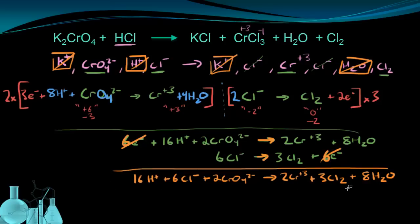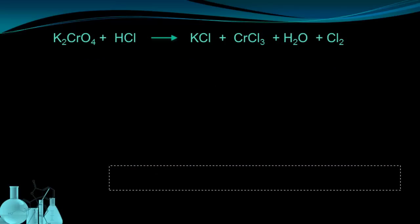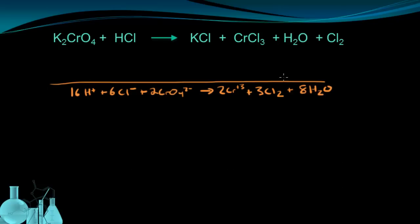We can now take this and use it to balance the original reaction. So we're going to clean this up a little bit so we're not looking at too much. And let's see how this reaction lets us fill in coefficients for the original reaction we had to balance. I have 16 hydrogen ions on the left side. Those had to have come from the HCl. So that has a coefficient of 16. I have two chromates. That had to come from this compound.